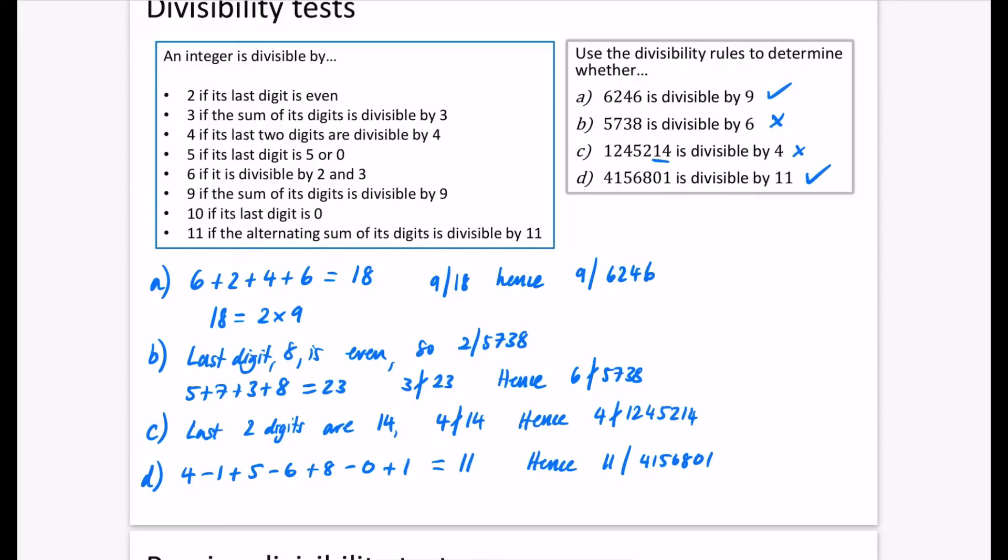Now I'm just going to show you this alternating sum. You can do this in loads of different ways. You don't have to start with it as positive. You could have started with negatives. We do negative, positive, negative, positive, negative, positive, negative. That's going to sum to negative 11. And obviously, we know that 11 is a factor of negative 11. We know that 11 divides negative 11. Hence, we could say 11 divides 4,156,801. So it doesn't have to start with plus. It could start with minus.